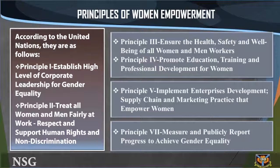Principle 3: Health, safety, and freedom from violence. Taking into account the differential impact on women and men, provide safe working conditions and protection from exposure to hazardous materials, and disclose potential risks. Strive to offer health insurance or other needed services, including for survivors of domestic violence, and ensure equal access for all employees. Train security staff and managers to recognize signs of violence, trafficking, forced labor, and sexual exploitation. Promote education, training, and professional development for women.